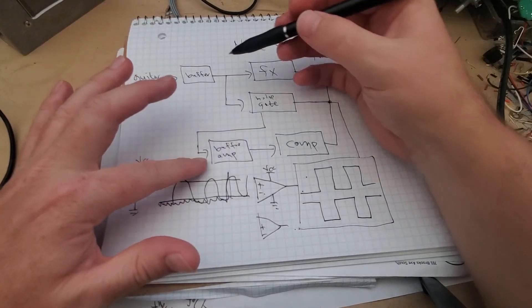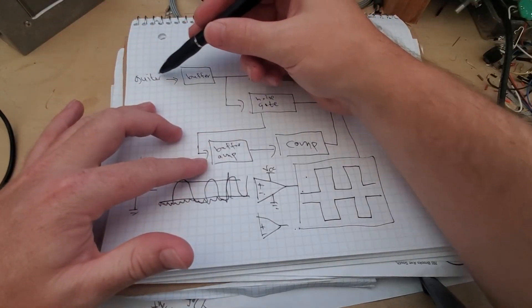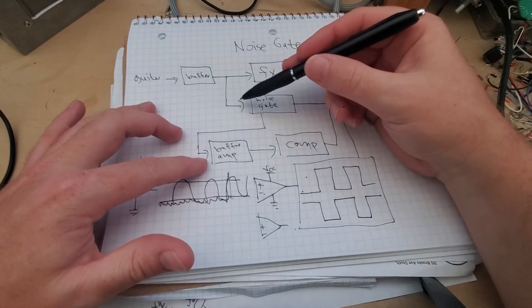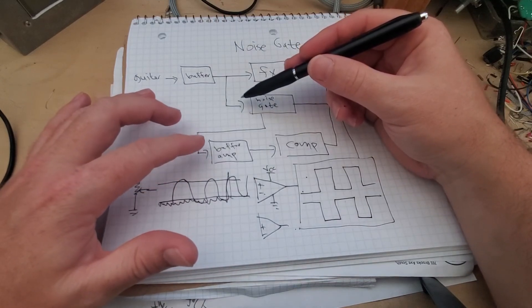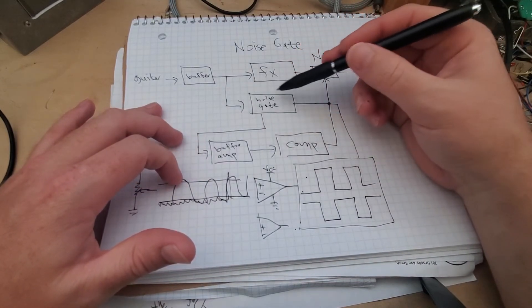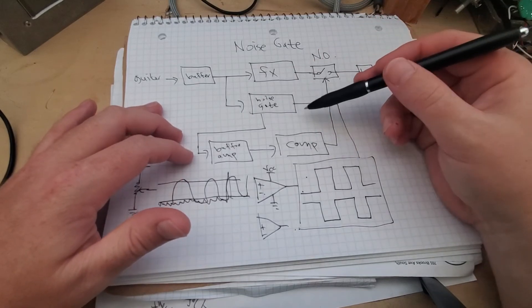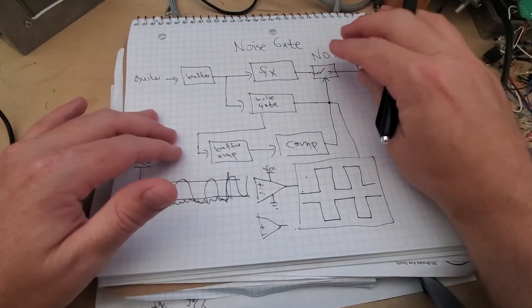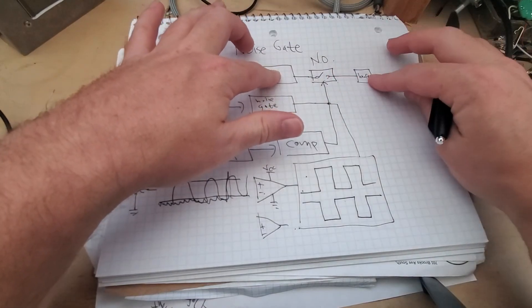But the basics of it is, simply to recap, you have your buffer coming through, this goes into a noise gate, and this noise gate pretty much controls whatever you want to turn on and off between the effects loop and the output.